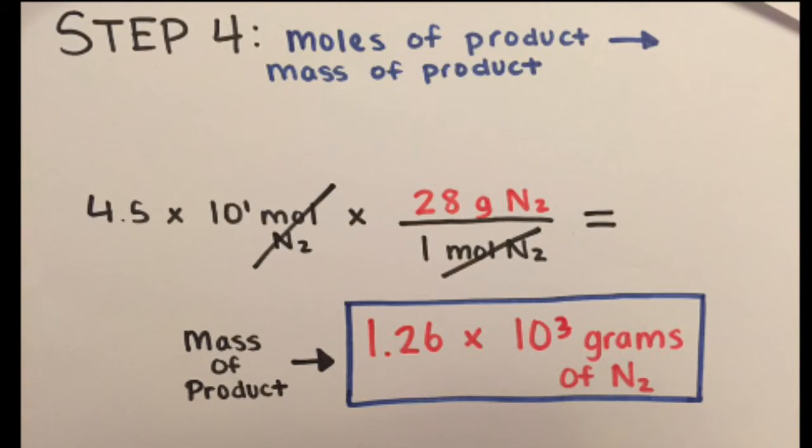We're not done yet. The question asks for grams, so we need to convert from moles of product to mass of product. Again, we determine the correct conversion factor and use a periodic table to find the mass of N2.